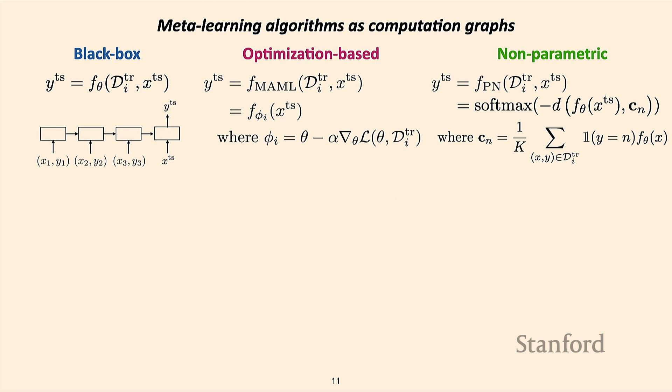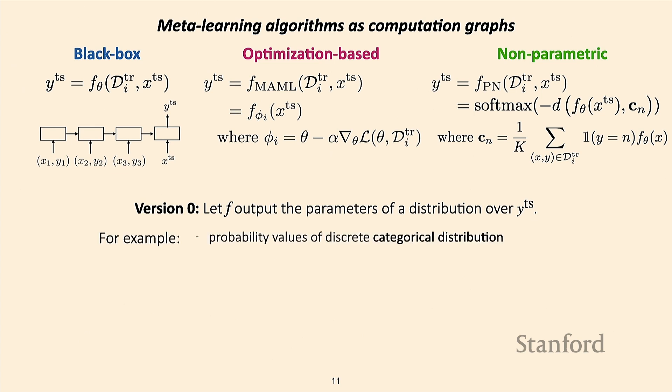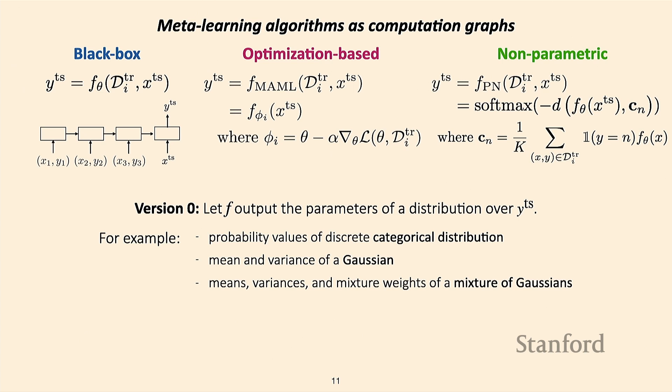Let's get into algorithms for doing this. A v0 algorithm we could think about: we've seen algorithms that give us a label Y_test given a support set and an input X_test. What we could do is have f output the parameters of a distribution over Y_test. In classification settings, you've already been doing that — outputting probabilities for each class. In regression problems, you could output the mean and variance, use a mixture density network outputting means, variances, and weights for a mixture of Gaussians, or for multi-dimensional output, use an autoregressive model.